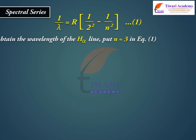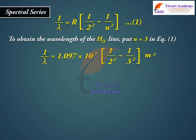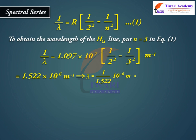To obtain the wavelength of the H-alpha line, put n = 3 in the equation: 1/λ = 1.097 × 10⁷ × (1/2² − 1/3²) m⁻¹ = 1.522 × 10⁶ m⁻¹. This gives λ = 1/1.522 × 10⁻⁶ m = 656.3 nanometers.